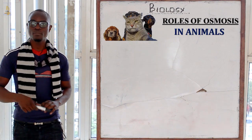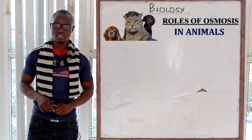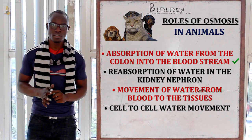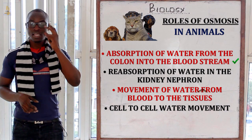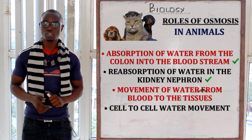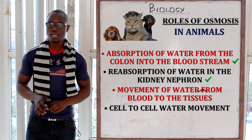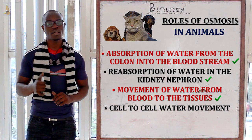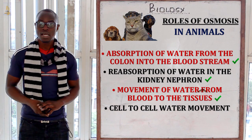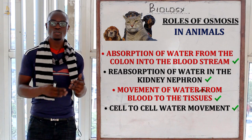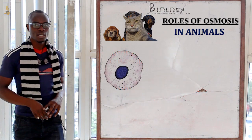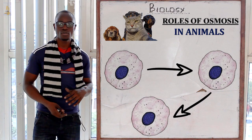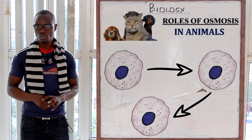Let's look at the roles of osmosis in animals. First, we have absorption of water from the colon into the bloodstream. Then we have osmoregulation, which happens in the kidney nephron. We also have movement of water from the plasma into the tissues, and lastly, cell-to-cell water movement, whereby water moves from one cell to another through osmosis.